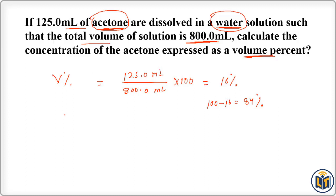Alternatively, we can apply the formula directly. We need the volume of water in the solution. The volume of solution is 800.0 ml and the volume of solute is 125.0 ml, so the volume of water is 800.0 minus 125.0, which equals 675.0 ml.